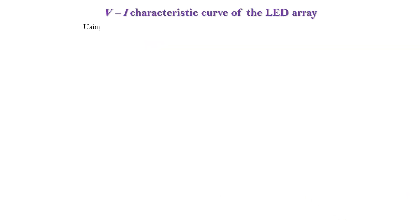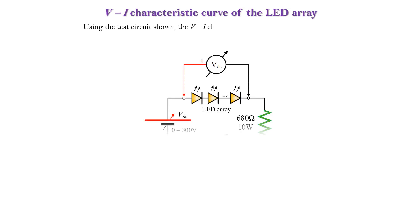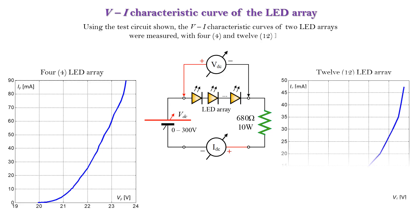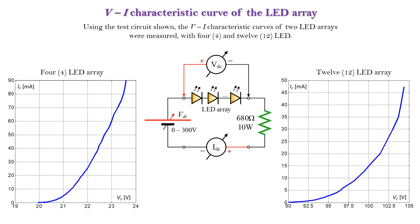Using the test circuit shown, the VI characteristic curves of two LED arrays were measured, with 4 and 12 LEDs. The forward voltage of the LEDs used in the bulbs ranges from 3 volts to 36 volts.